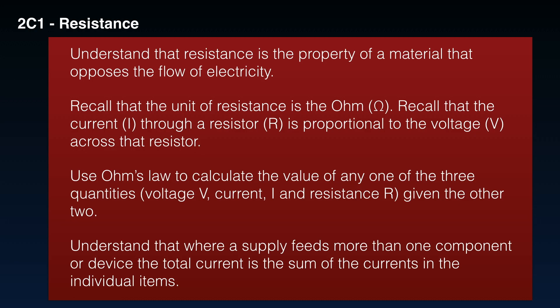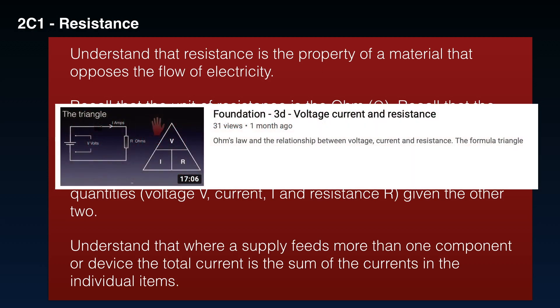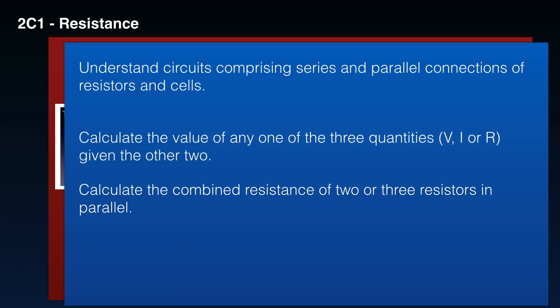Resistance 2C1. Understand that resistance is the property of a material and opposes a flow of electricity. Recall that the unit of resistance is the ohm. Recall that the current through the resistor is proportional to the voltage across that resistor. Use ohm's law to calculate the value of any one of the three quantities, V, I, or R, given the other two. Understand that where a supply feeds more than one component or device, the total current is the sum of the currents in the individual items. Once again, have a look through voltage, current, and resistance 3D if you need to refresh that. You may also need to have a look at Kirchhoff's laws.